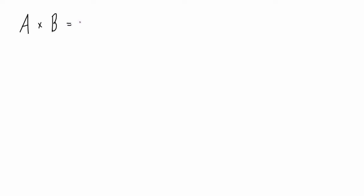So if we have two matrices — matrix A multiplied by matrix B — we get the resulting matrix AB. If A is an M by N matrix and B is an N by R matrix, meaning A has M rows and N columns and B has N rows and R columns, then the product AB is going to be an M by R matrix. The key here is that the number of columns of matrix A has to equal the number of rows of matrix B, otherwise we can't multiply them.